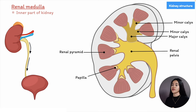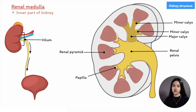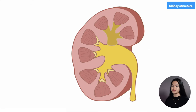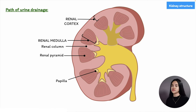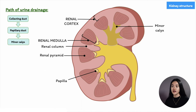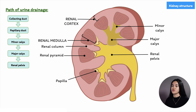Urine drains into the ureter, which transports urine toward the bladder, exiting the kidney through the hilum — the entry and exit point where veins, nerves, lymphatics, and ureters that supply the kidneys enter and leave. To recap: urine drains from the pyramids, through the collecting duct and papillary duct, then to the minor calyx, major calyx, renal pelvis, ureter, and eventually to the bladder.